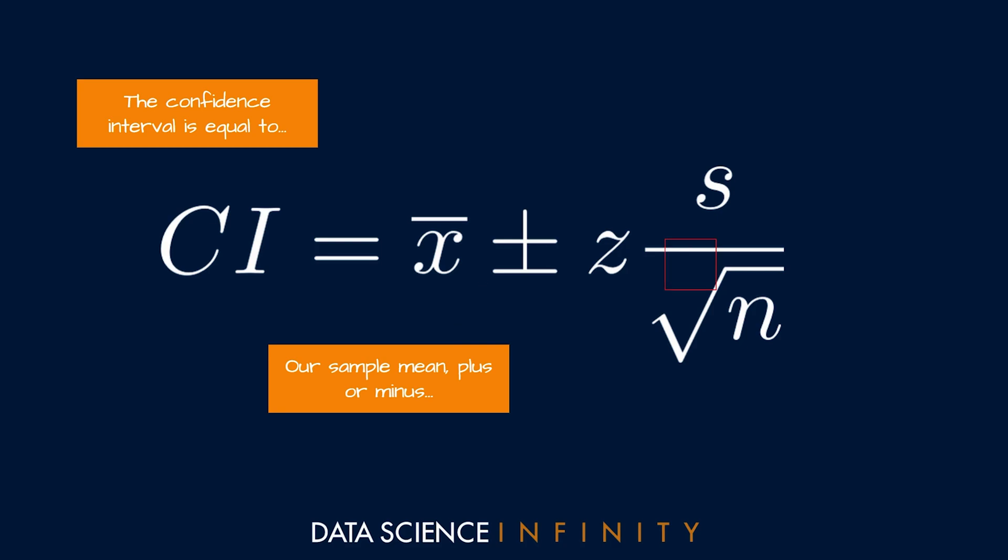So plus or minus this thing here which is known as the margin of error. When we calculate the margin of error in our example we are going to get some value in centimeters which we will add and subtract from our sample mean. Once we do this we'll be able to say that we have some level of confidence that the population mean lies between value one and value two.